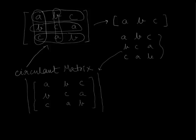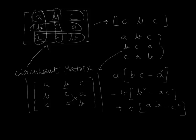In order to calculate the determinant of this matrix, we will expand it. The first element is a, and then you have to multiply this by bc minus a squared. Then in front of the second element which is b, we put the negative sign, and then b times this is going to be equal to b squared minus ac. And then we have plus c times ab minus c squared.